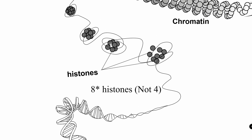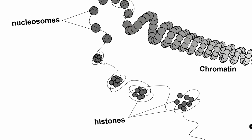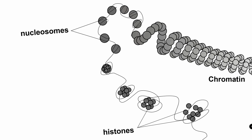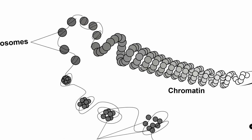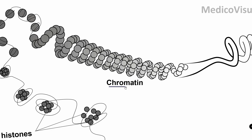We have four histone proteins that form an octamer, and the DNA is woven around this histone octamer. The histone complex with DNA wound around it is called a nucleosome. This nucleosome complex is then further coiled around itself to form the structure called chromatin.